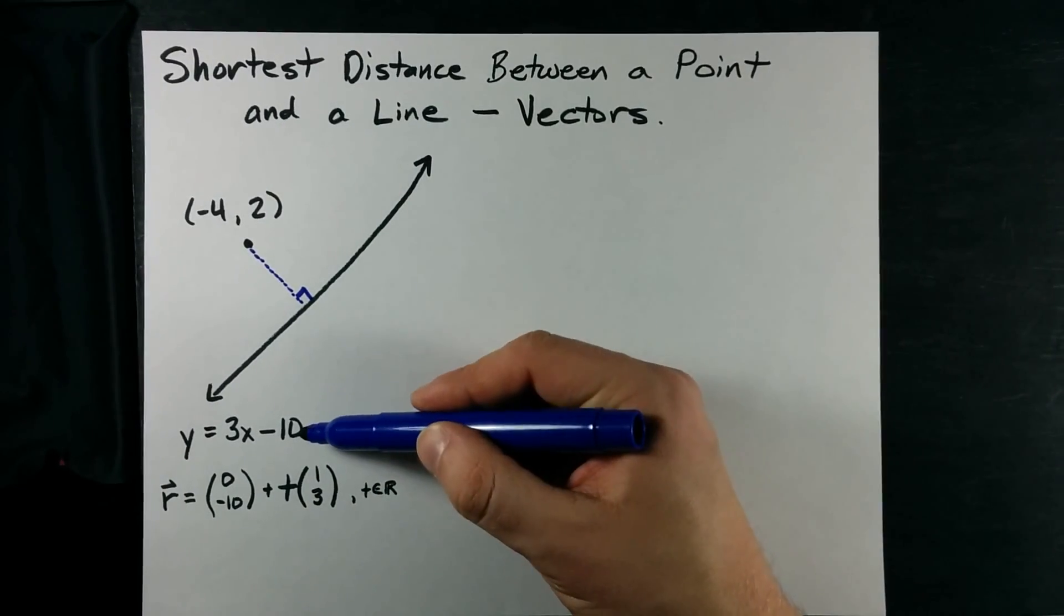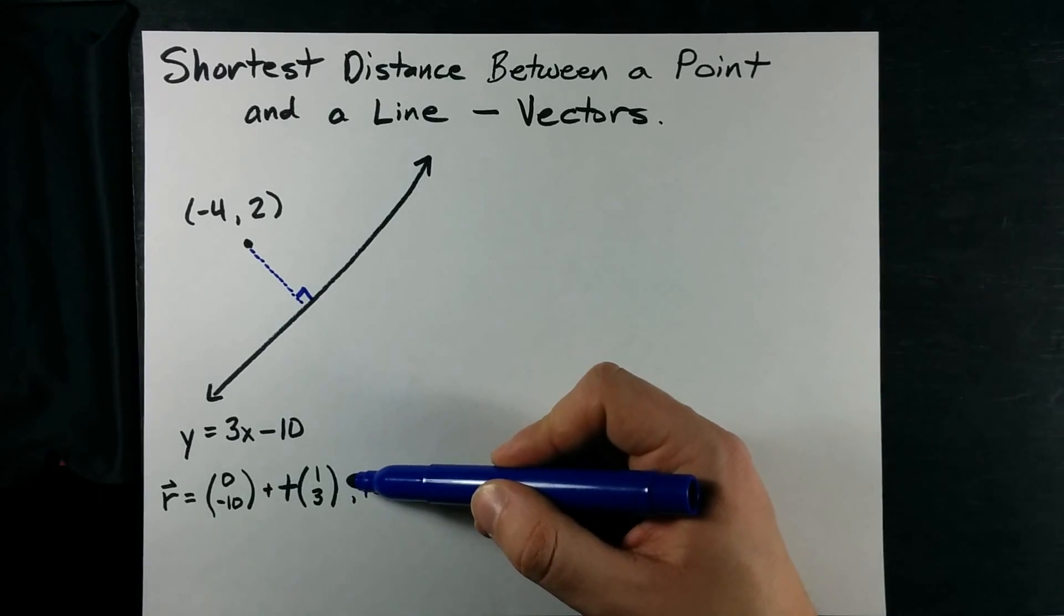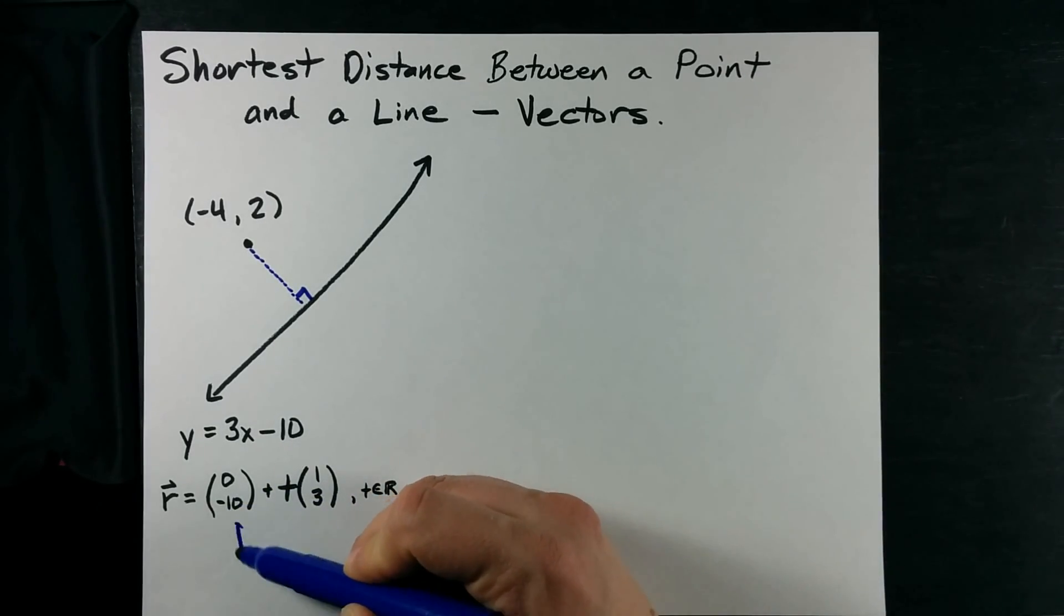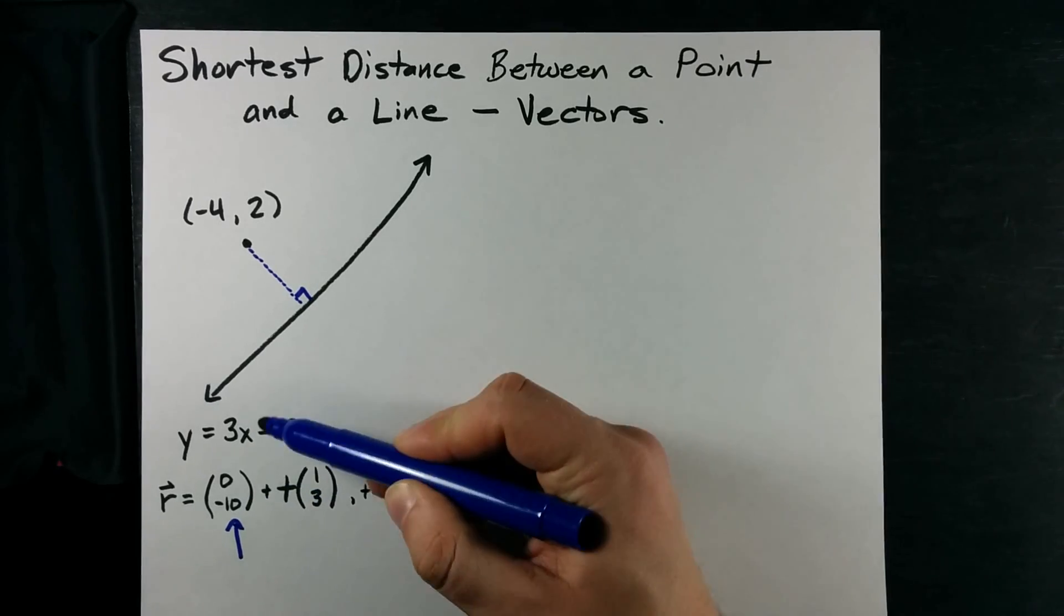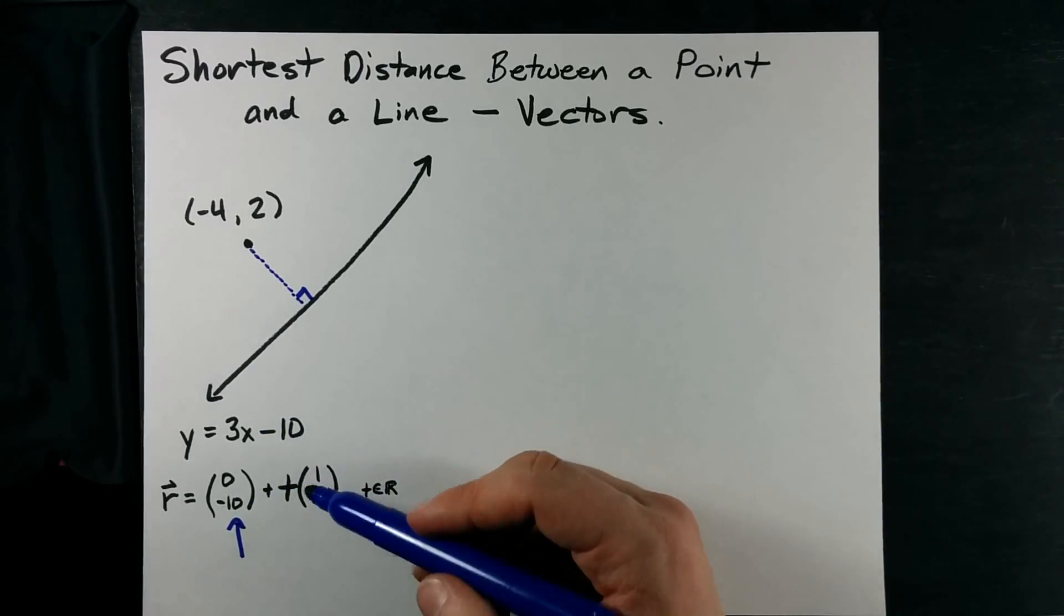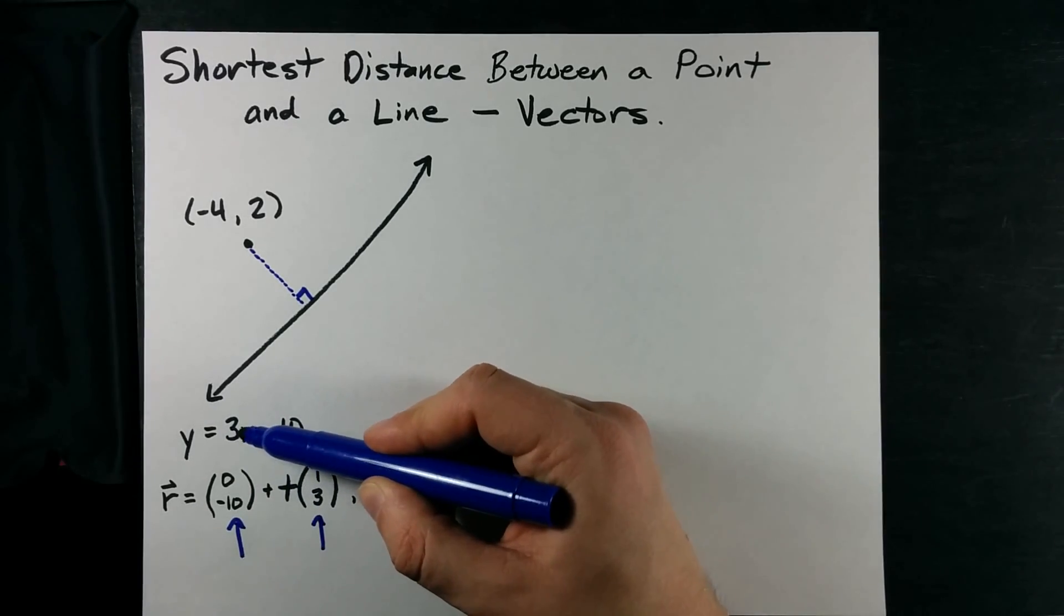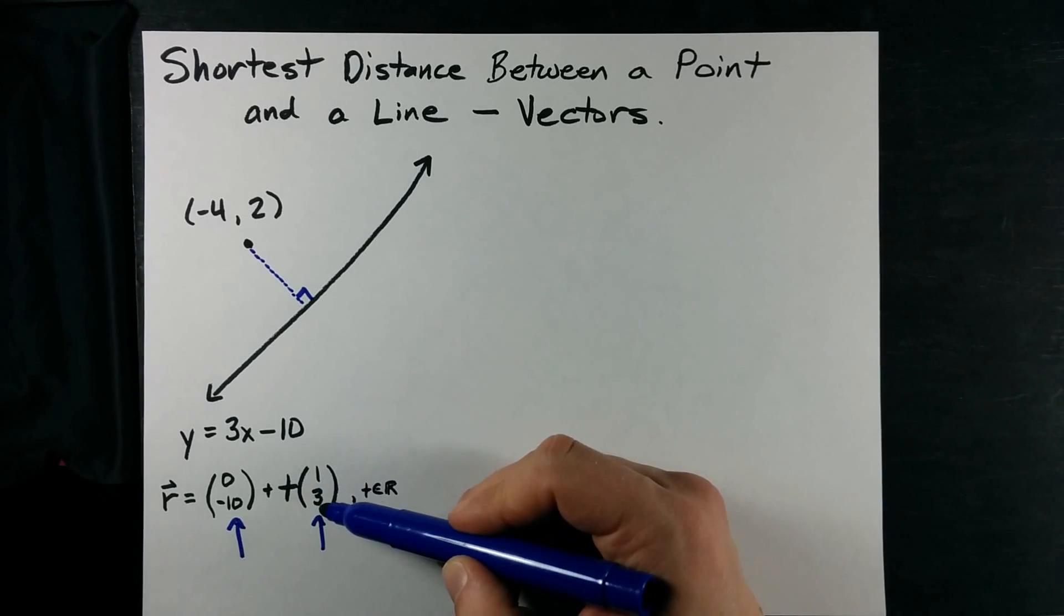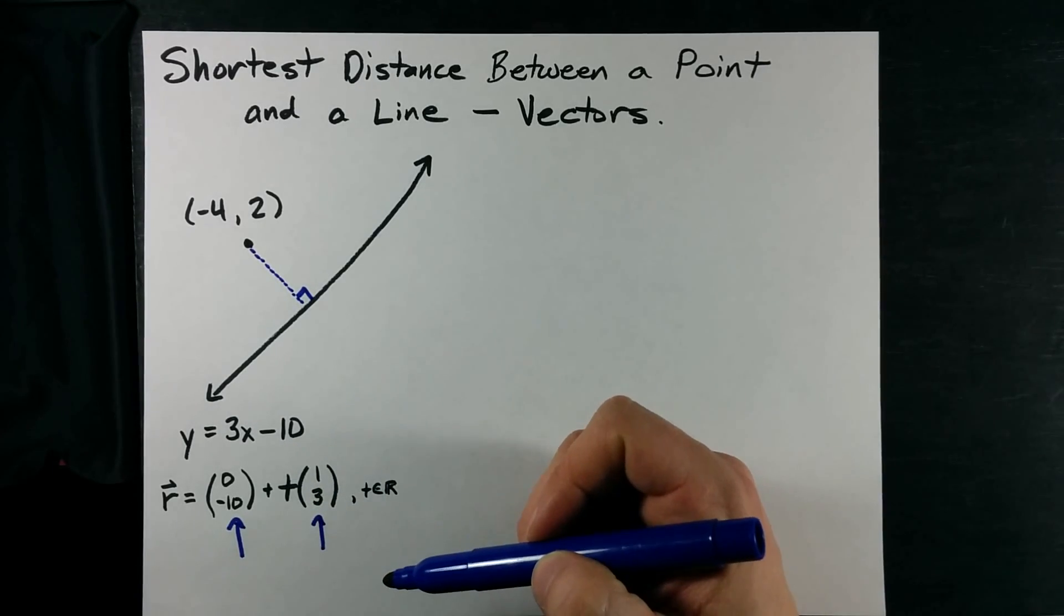Because I was given this equation of the line I converted it to a vector equation. Here I have my position vector which I've based on the y-intercept of 0, negative 10 and I've turned my slope into a direction vector. This slope up 3 over 1 means I'm changing my y by 3 every time I change my x by 1.